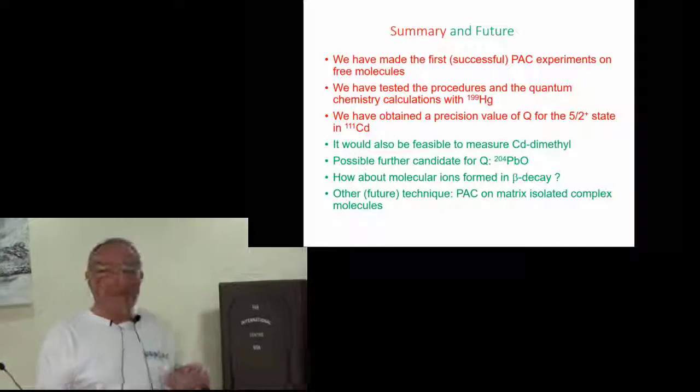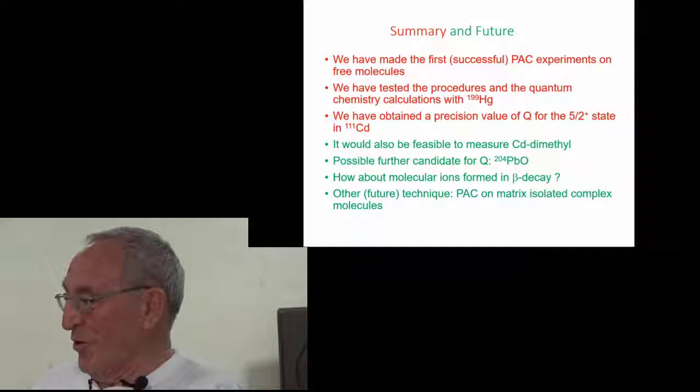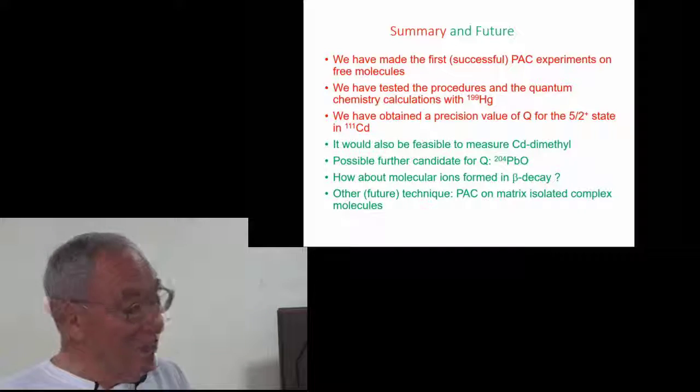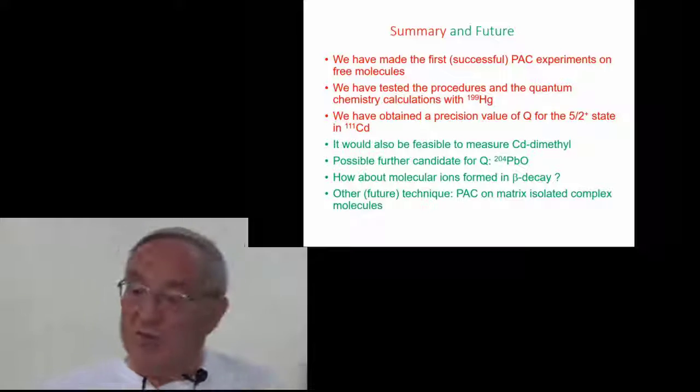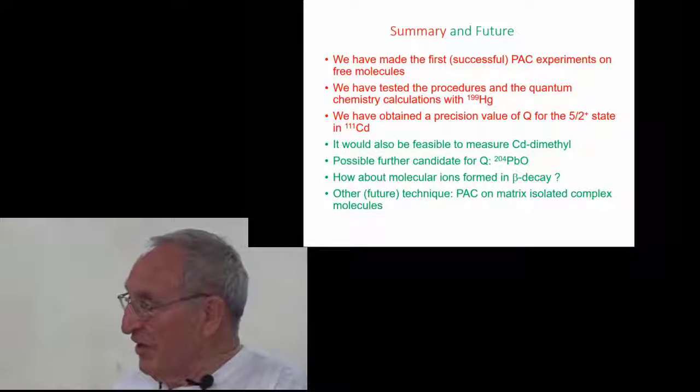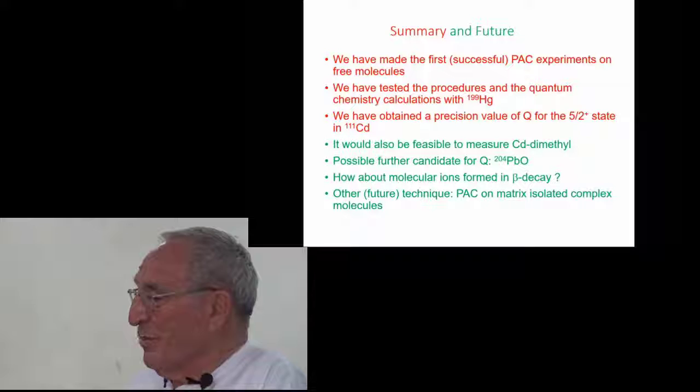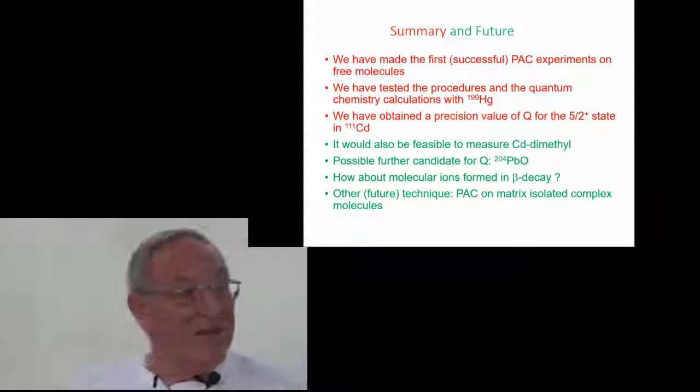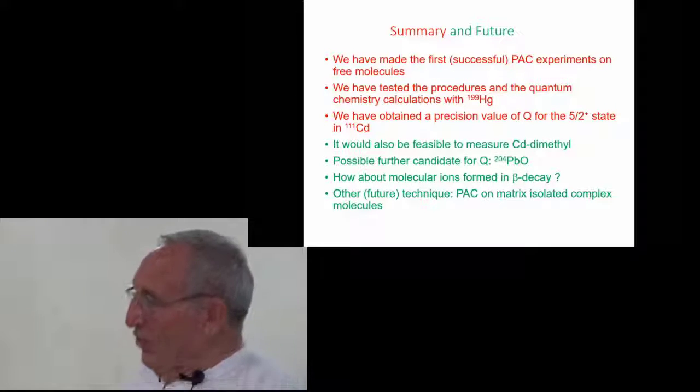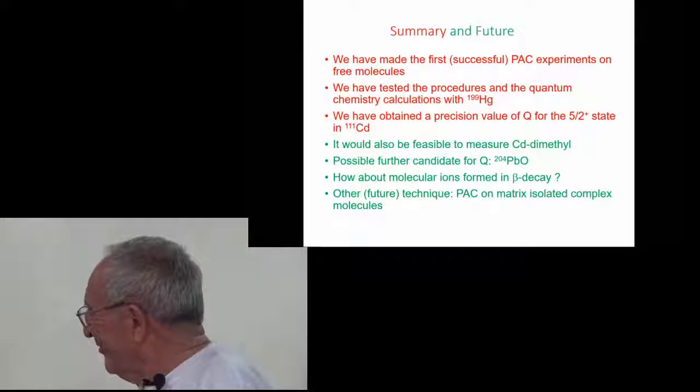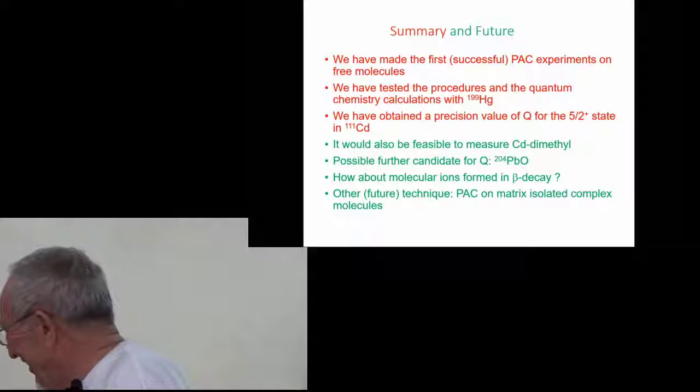And in beta decay, ions are being formed in a free state, so that is one possible field. And another one is to correlate these cases with measurements in a matrix. This is standard in vibrational spectroscopy and has never been done in perturbed angular correlation, particularly in the rare gas matrices with very little interaction. Again, to quantify the intermolecular interactions. So that's the end of my story. Thank you.